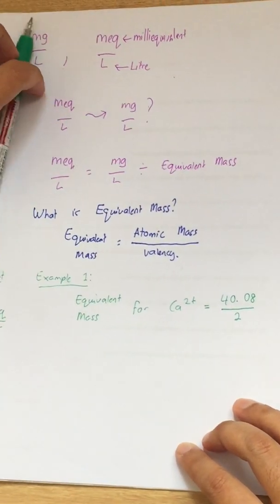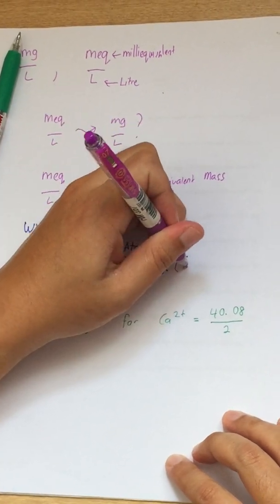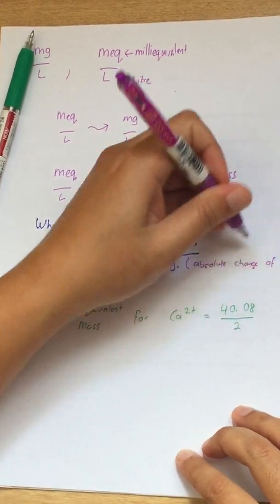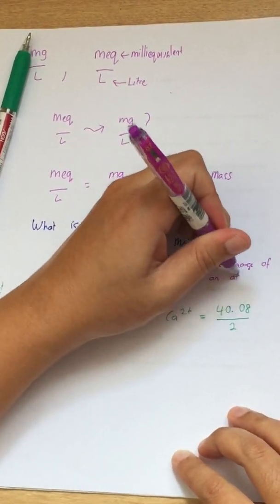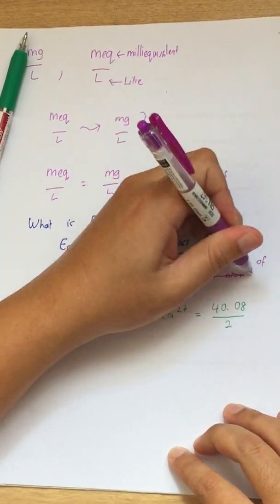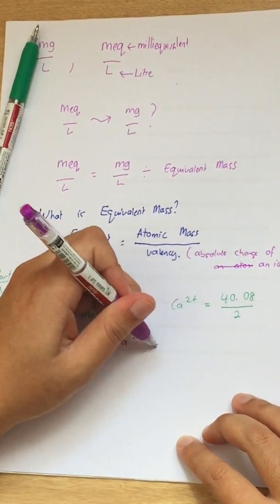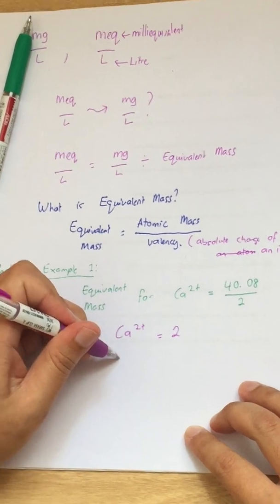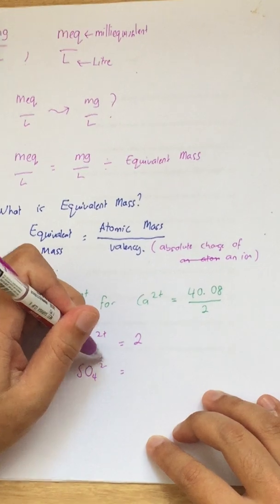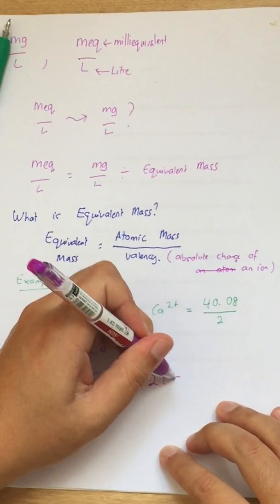I would like to add when you talk about the valency, this is actually the absolute charge of an atom or an ion. So if you have calcium with 2 plus, the absolute charge is 2. If you have sulfate ion whereby the charge is negative 2, the absolute charge is still 2.